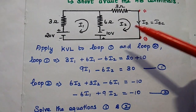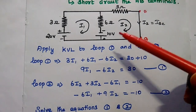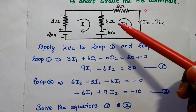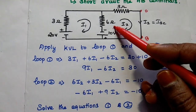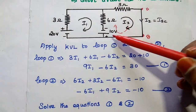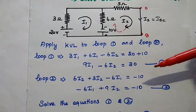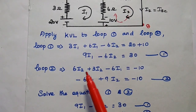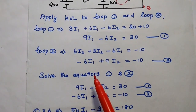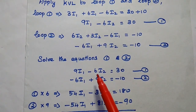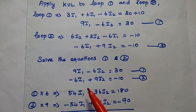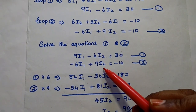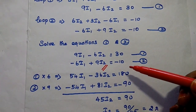Applying KVL to the second loop with current I2, the voltage drops are 6I2 + 3I2 − 6I1. The current is flowing in a direction where we take the voltage as minus 10. This gives the second equation: −6I1 + 9I2 = −10. So we now have two equations: 9I1 − 6I2 = 30 from Loop 1, and −6I1 + 9I2 = −10 from Loop 2. We want to find I2 since I2 equals the short circuit current.